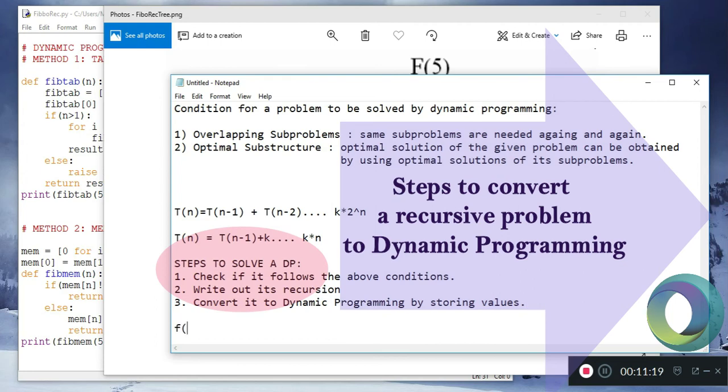The recursion of the Fibonacci is F of n equals F of n minus 1 plus F of n minus 2. Now simply convert it into dynamic programming by storing the intermediate subproblem results.